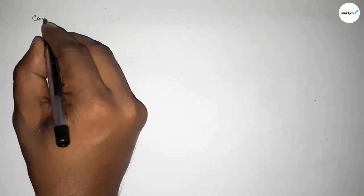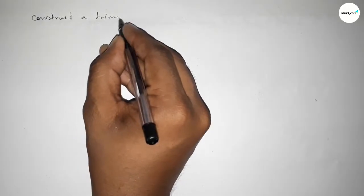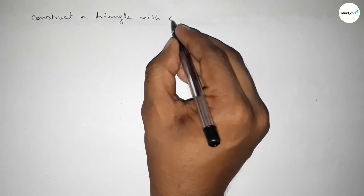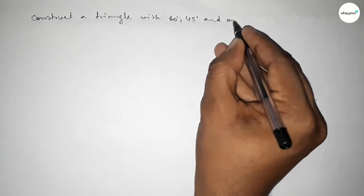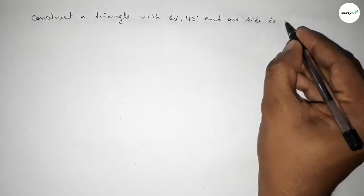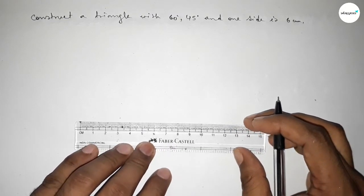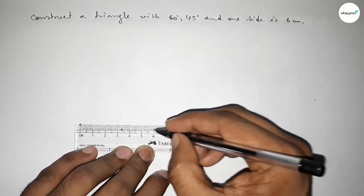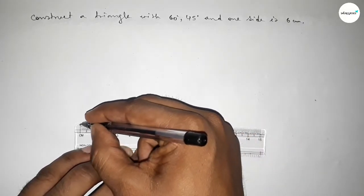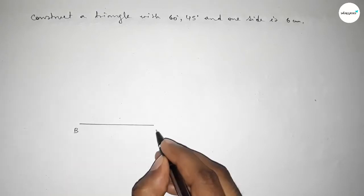Hi everyone, welcome to SISR classes. Today in this video we have to construct a triangle with two given angles: 60 degrees and 45 degrees, and one given side of 6 centimeters. Let's start the video. First of all, we have to draw a line of length 6 centimeters. This is 6 centimeters, taking point B here and point C here.